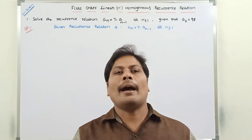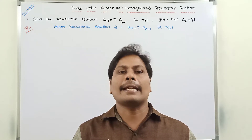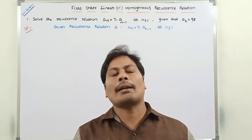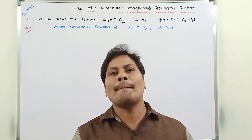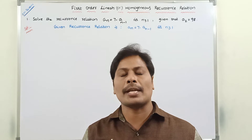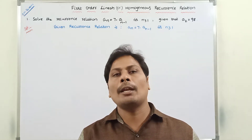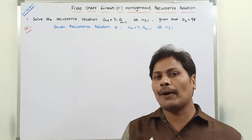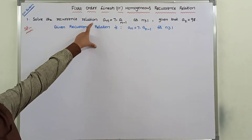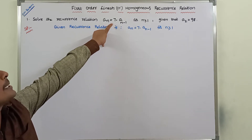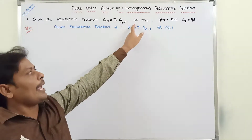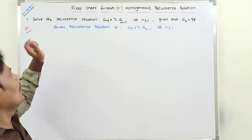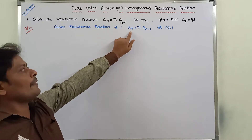Hi friends, today I am giving a lecture on an example problem on first order linear recurrence relation. In the previous video we already discussed one example problem. Now in this video we have to solve another example problem. So, solve the recurrence relation: a_n = 7 · a_{n-1}, for n ≥ 1, given that a_2 = 98.